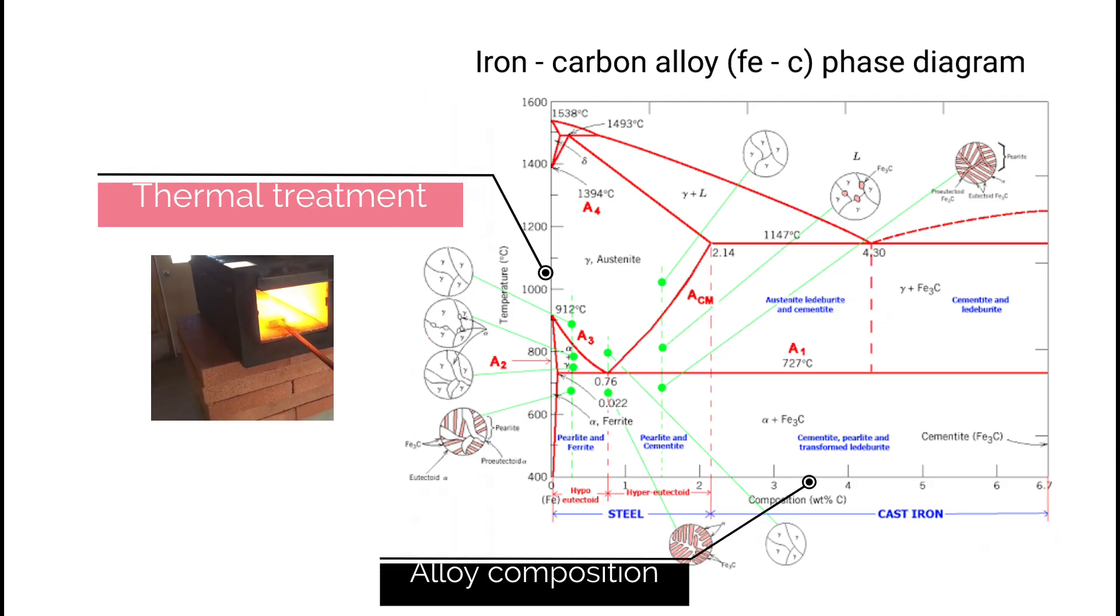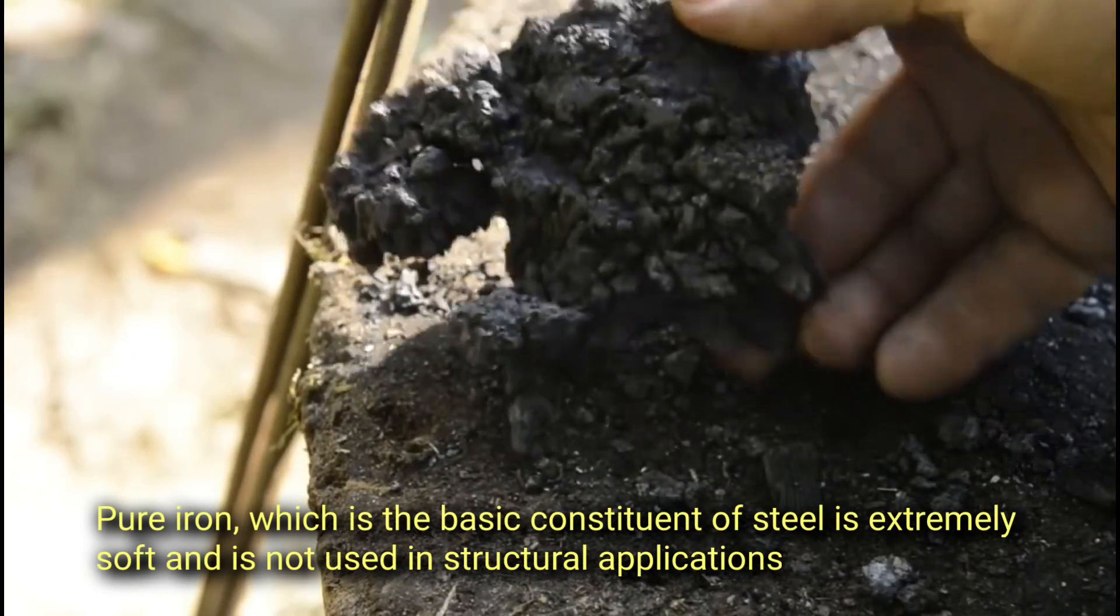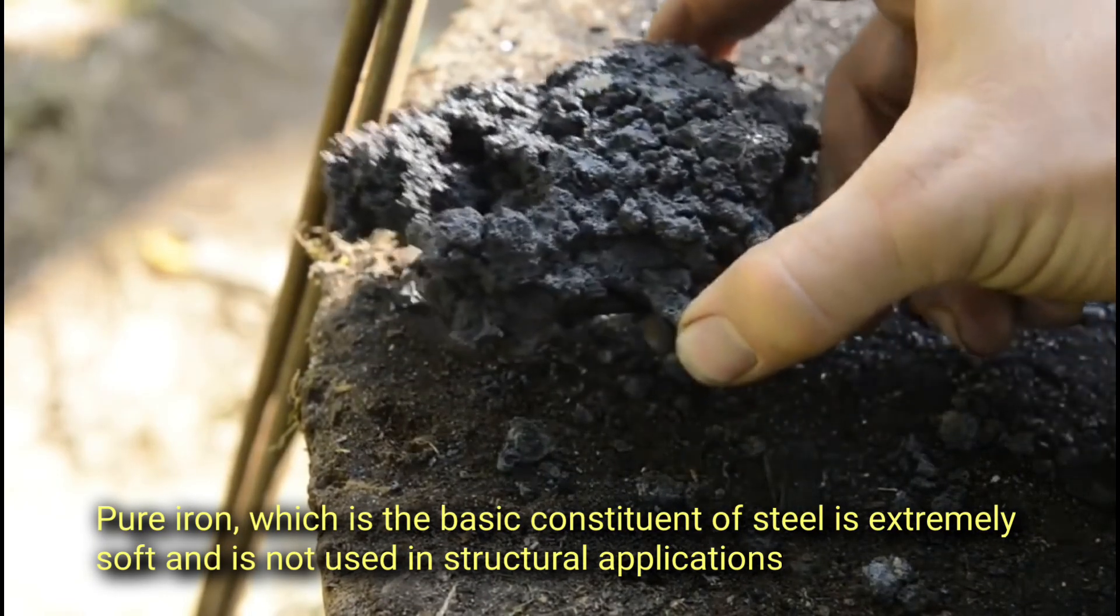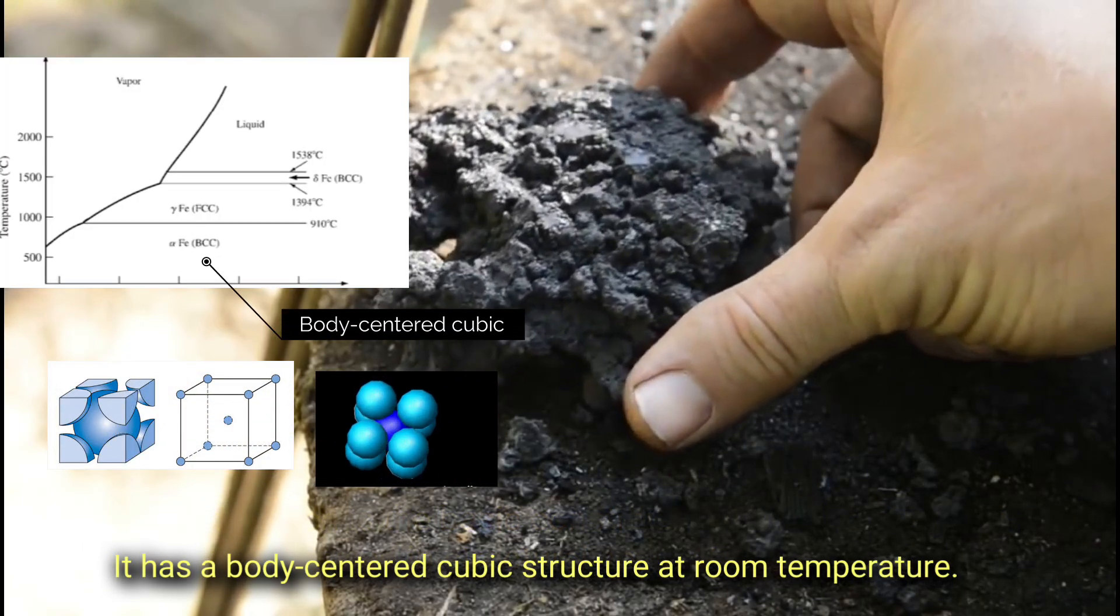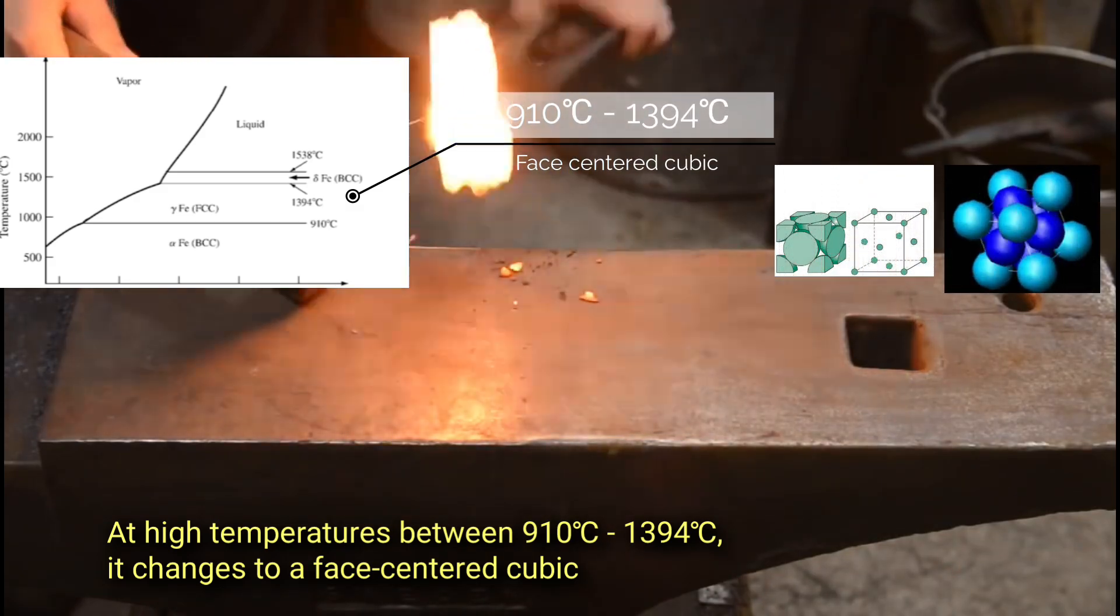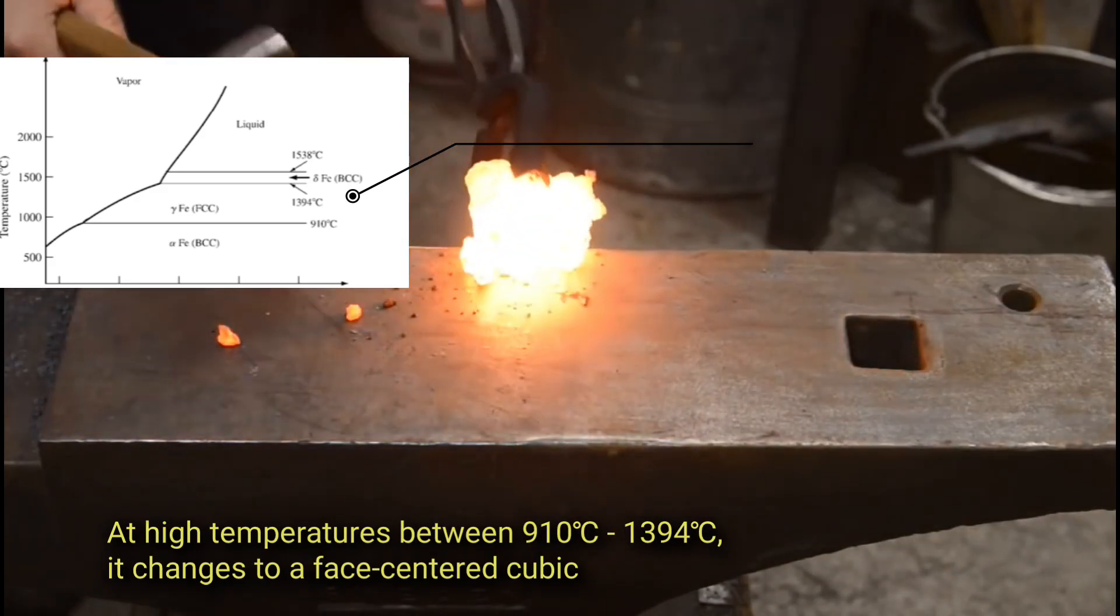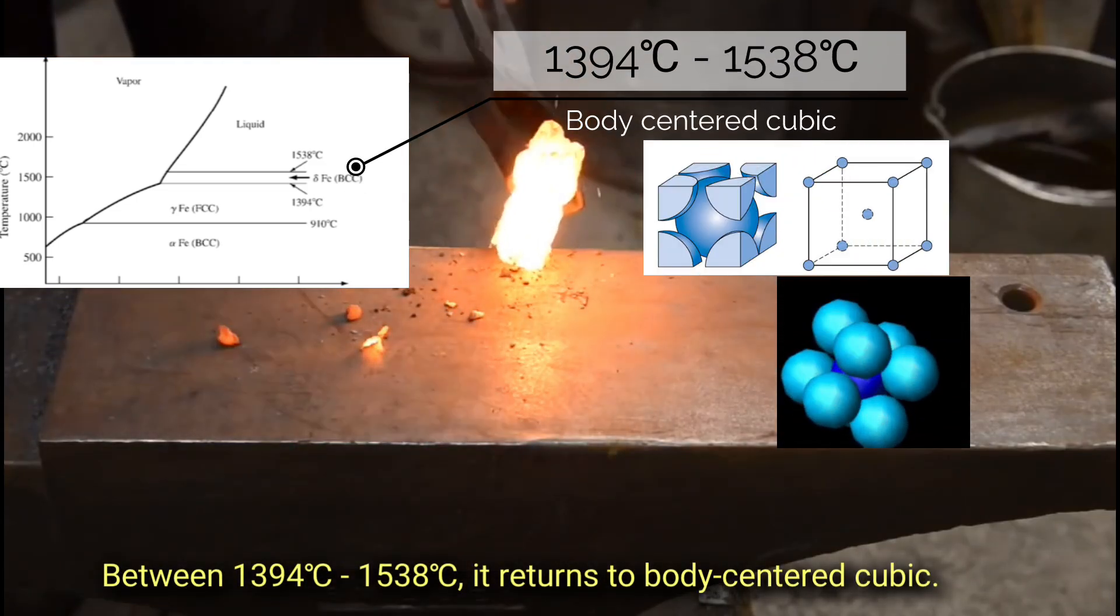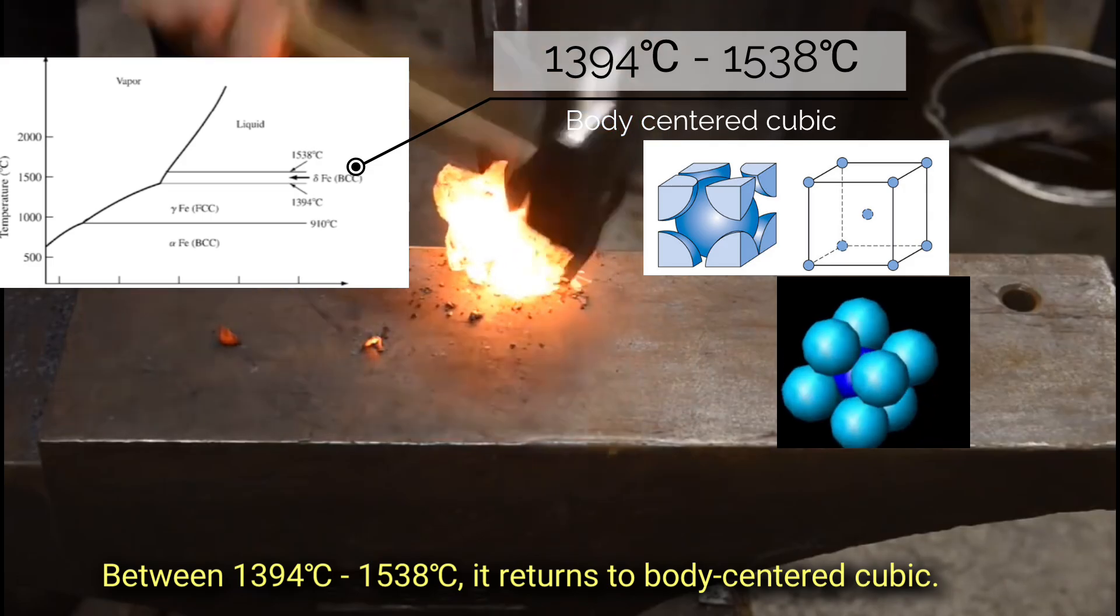Pure iron, which is the basic constituent of steel, is extremely soft and is not used in structural applications. It has a body-centered cubic structure at room temperature. At high temperatures between 910 to 1394 degrees Celsius it changes to face-centered cubic, and between 1394 to 1538 degrees Celsius it returns to body-centered cubic.